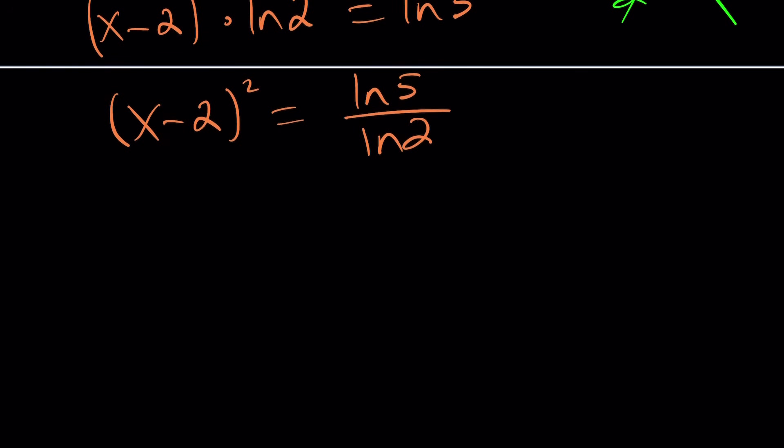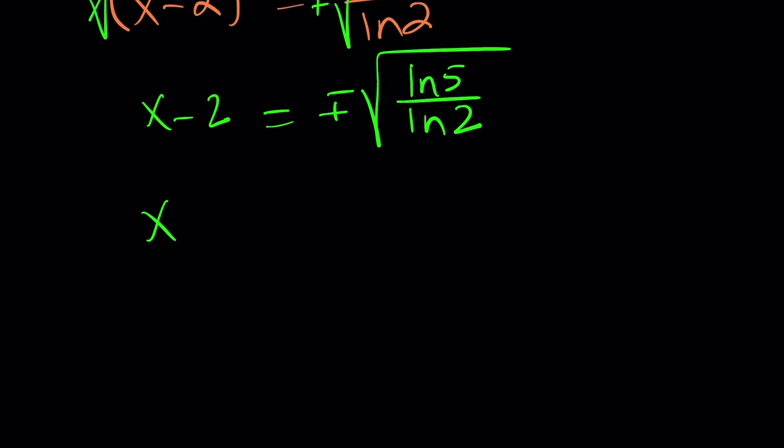Square root both sides. But when you do square root, something happens. When you square root this, you get the absolute value or the plus minus sign. So when you square root, do not forget to put a plus minus sign here. So you get x minus two equals plus minus the square root of ln five divided by ln two. And of course, you're allowed to add two to both sides, which you should. Then you get two plus minus the square root of ln five over ln two.